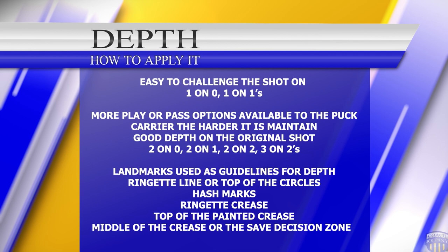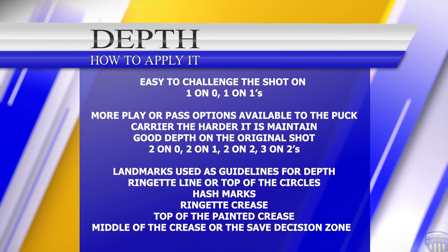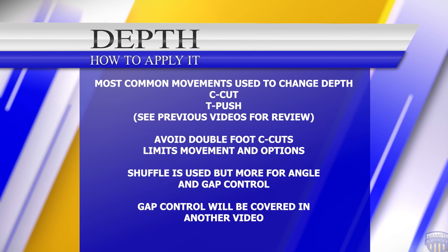We have a few rules of thumb for visual cues on where we should be for our depth, to make the most of our body frame. These cues or landmarks are the ringette line, hash marks, top of the crease, and the ringette crease. The new visual cue we are going to use this time is also the middle of our crease — the save decision zone.